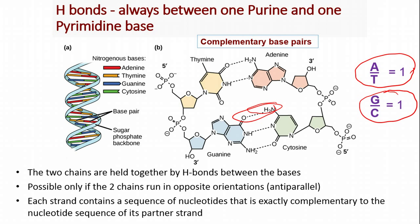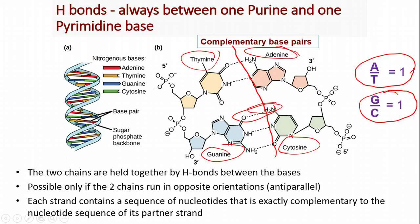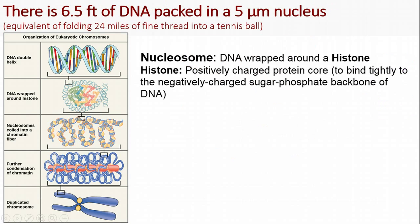The chains run anti-parallel — 5-prime to 3-prime and 3-prime to 5-prime — and each strand contains a sequence of nucleotides exactly complementary to its partner strand. So if you split the DNA in half and only had one strand, it would be a simple puzzle: thymine always binds to adenine, and guanine always binds to cytosine. Half a DNA strand essentially carries all the information necessary to form the other strand because we know the rules of how base pairs bind together.